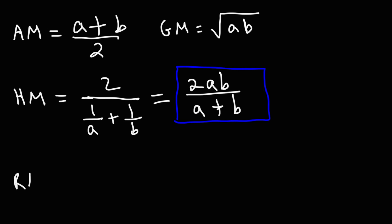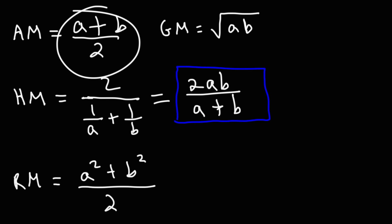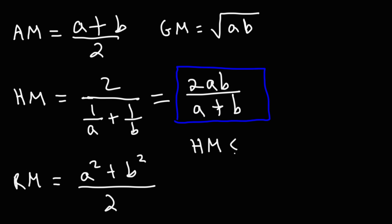To find the root mean square of two numbers, take the sum of the squares of those numbers divided by 2, then take the square root — very similar to the arithmetic mean but you're squaring a and b first. For any two numbers, the harmonic mean is less than the geometric mean, which is less than the arithmetic mean, which is less than the root mean square.